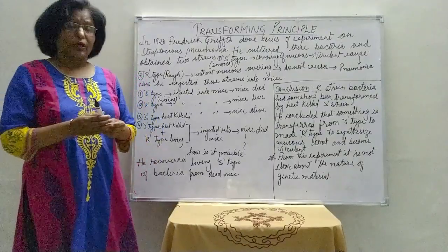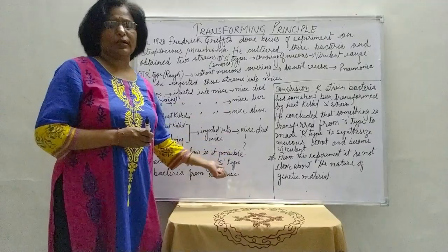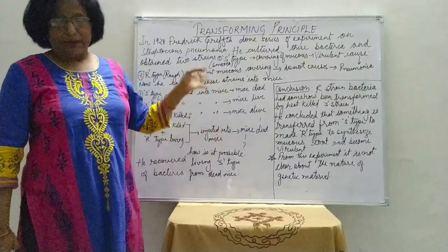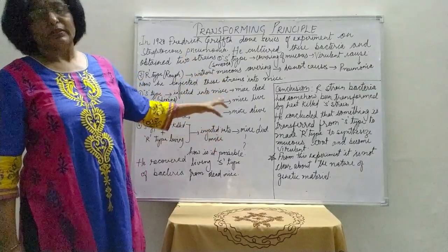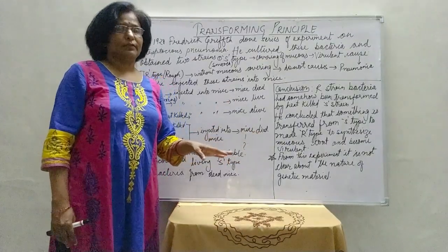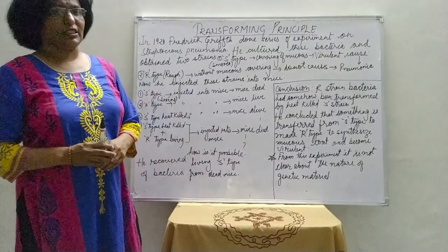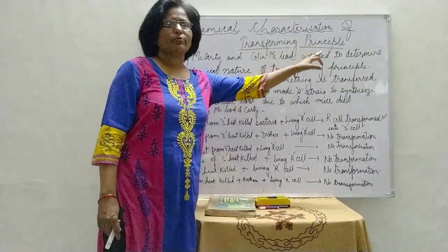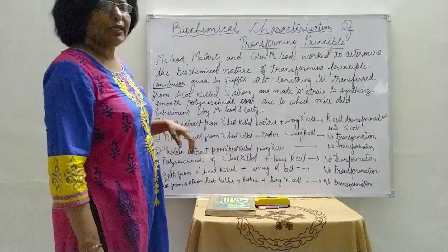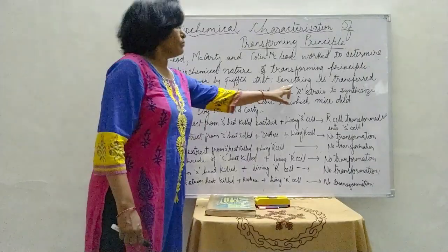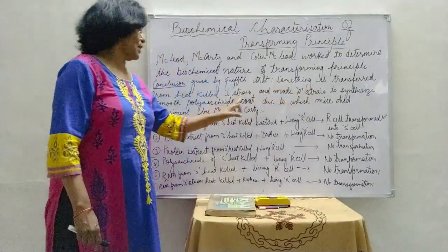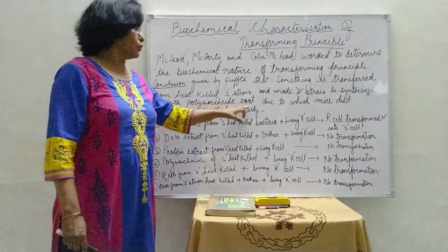Other scientists used the benefit of Griffith's experiment. Avery, MacLeod, and McCarty concluded that DNA is the genetic material — the biochemical characterization of the transforming principle. Building on Griffith's experiment, they addressed the question: what does 'something' stand for — DNA, RNA, protein, or carbohydrate — that is responsible to carry the characters?